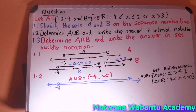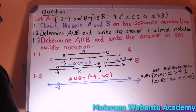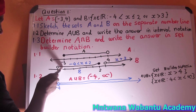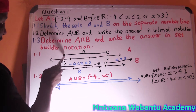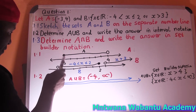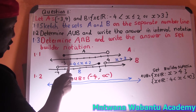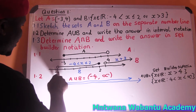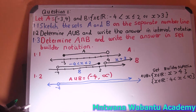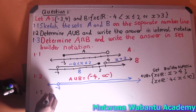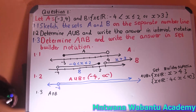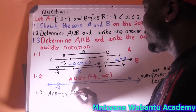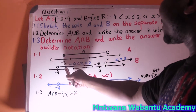Now the last part: A intersection B. Intersection means where do they have things in common? From negative 4 to negative 3 there's something in A but nothing in B, so no common region there. But from negative 3 onwards, both A and B have values on the number line, so they intersect. They have something in common from negative 3 all the way up to positive 2.